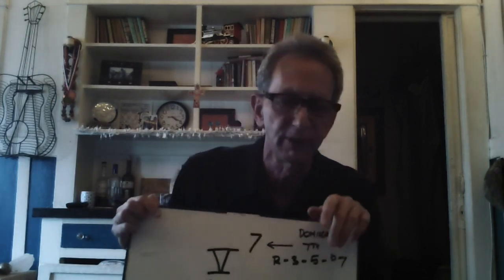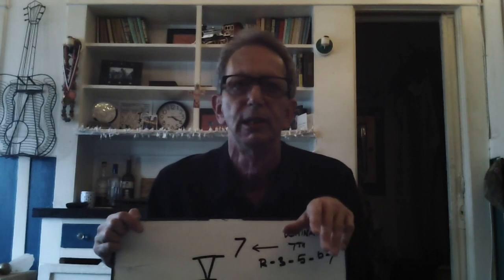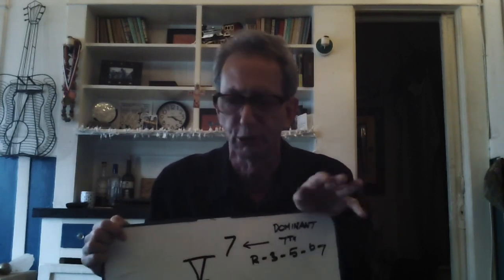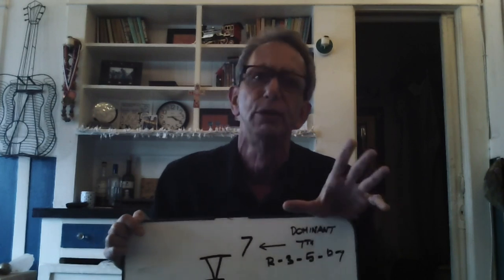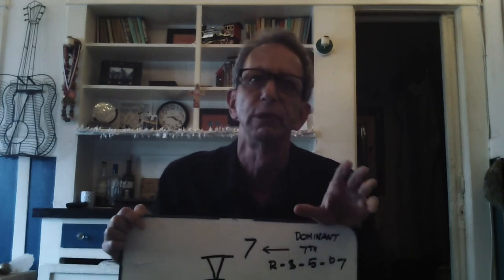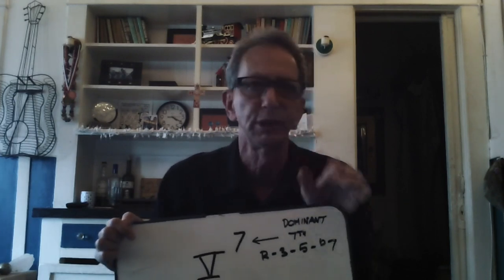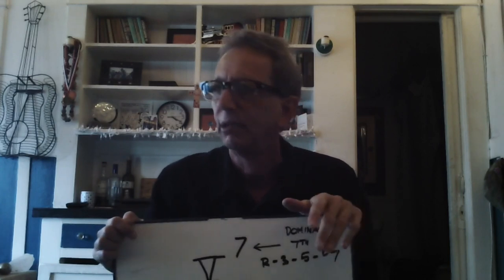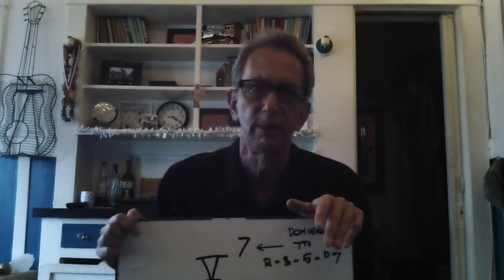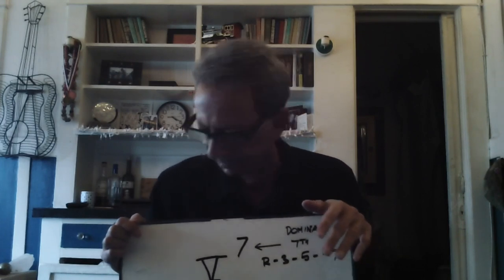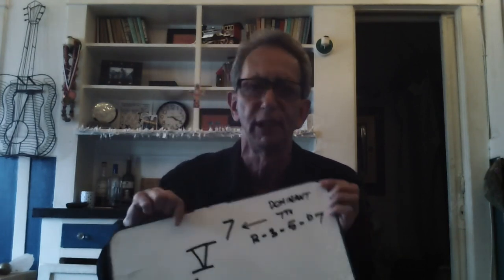The thing about the V7 is it's so versatile. For example, there's such a thing as the flat two dominant seventh, which is known as a tritone substitution — we'll get to that later. Today we're going to touch on the first type, which is secondary dominance. Right now we're going to talk about why a V7 is a V7, and to me this is a fascinating exploration.